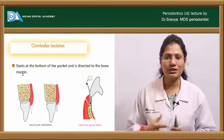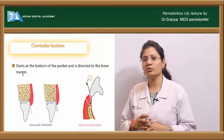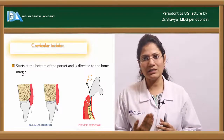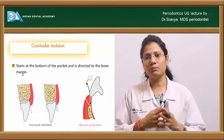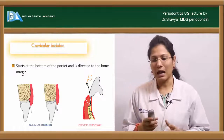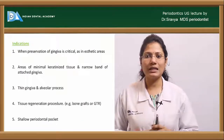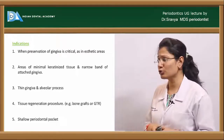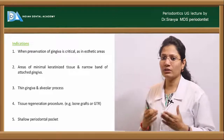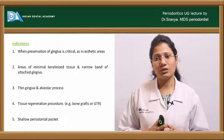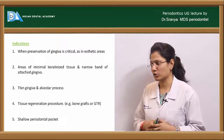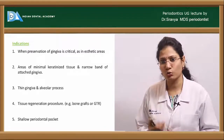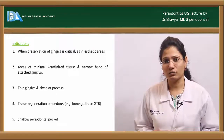The second horizontal incision is the crevicular incision. It starts at the bottom of the periodontal pocket and is directed towards the alveolar bone, breaking the continuity between the base of the pocket and the alveolar bone. Indications include: preserving as much gingiva as possible in aesthetic areas; where there is minimal keratinized tissue or a narrow band of attached gingiva; thin gingiva and alveolar processes; regenerative procedures where tissue must be conserved; and shallow periodontal pockets where sacrificing 1.5 mm of gingiva with an internal bevel incision is undesirable.